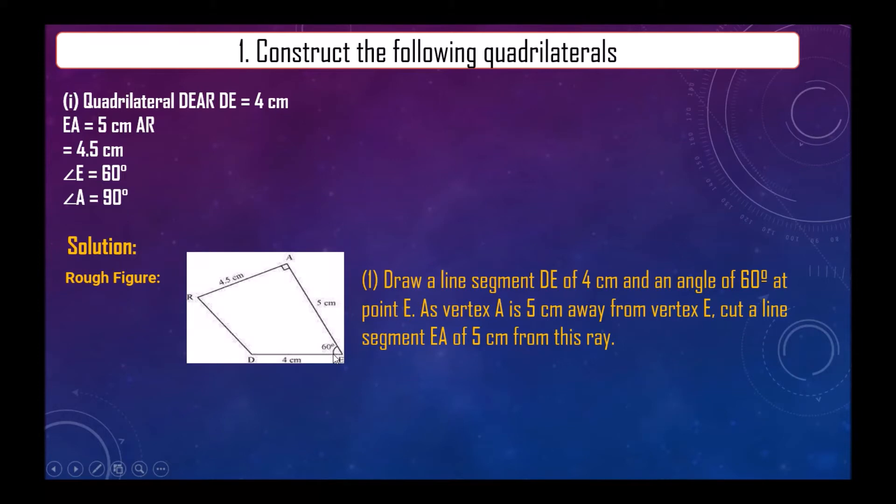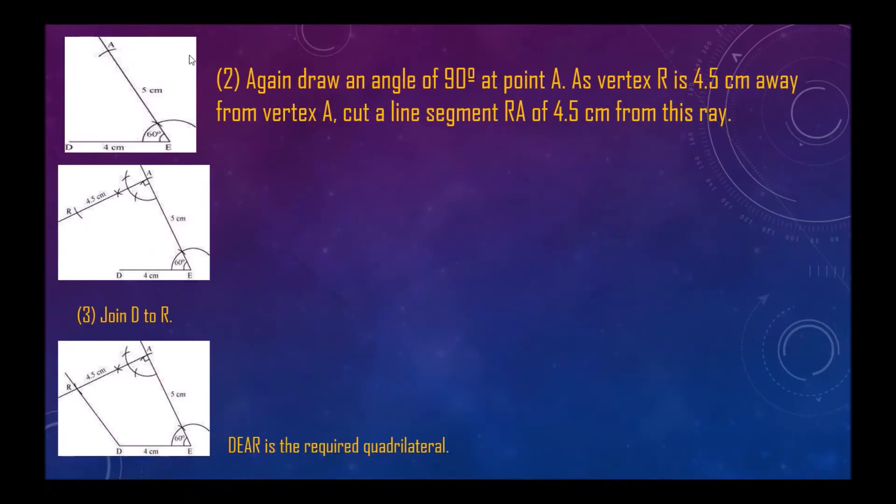As vertex A is 5 centimeter away from vertex E, cut a line segment EA of 5 centimeter from this ray. So 5 centimeter ray we have cut. Again draw an angle of 90 degree at point A.